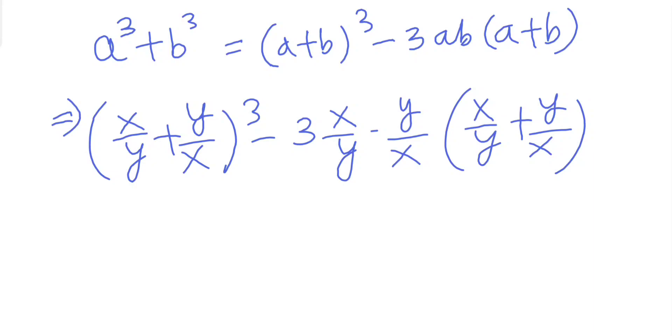Here basically a equals x/y and b equals y/x, so clearly this will cancel here. We'll be left with (x/y + y/x)³ - 3(x/y + y/x).